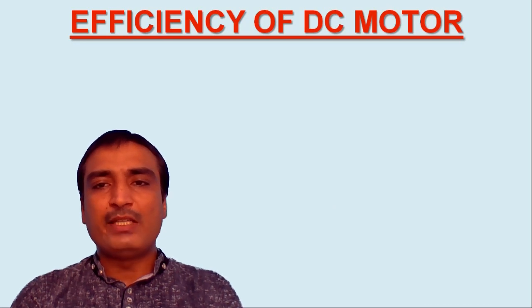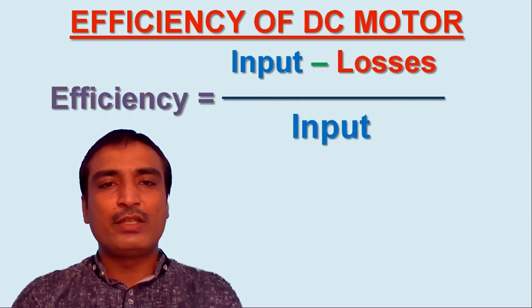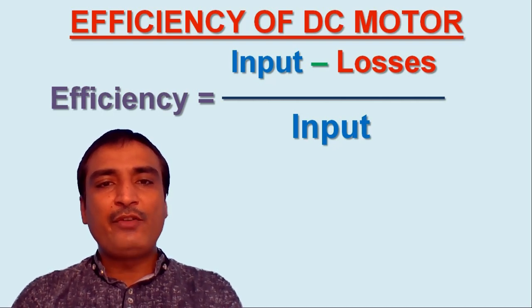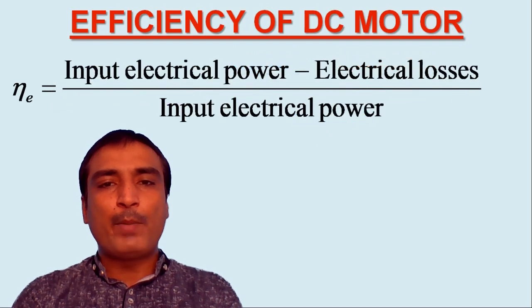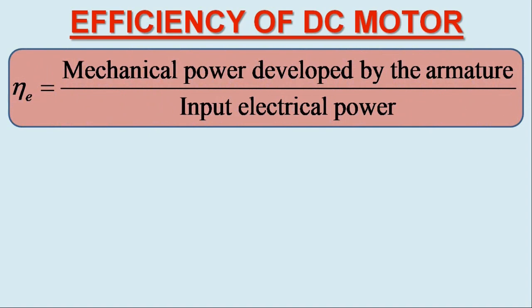In view of the first partition in the power flow separation diagram for DC motor, we may define the electrical efficiency using the equation: efficiency equals input minus losses over input. The term input electrical power minus electrical losses is nothing but the mechanical power developed by the armature, Eb×Ia. So the electrical efficiency of the DC motor is written as mechanical power developed by the armature over input electrical power.